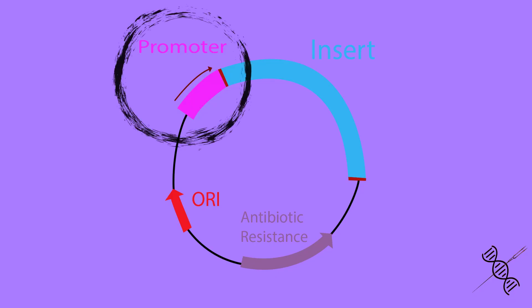Next is the promoter. The plasmid promoter is directly responsible for the initiation of the RNA transcription process of the gene of interest, and is usually found at the beginning of the gene, containing the RNA polymerase binding site.